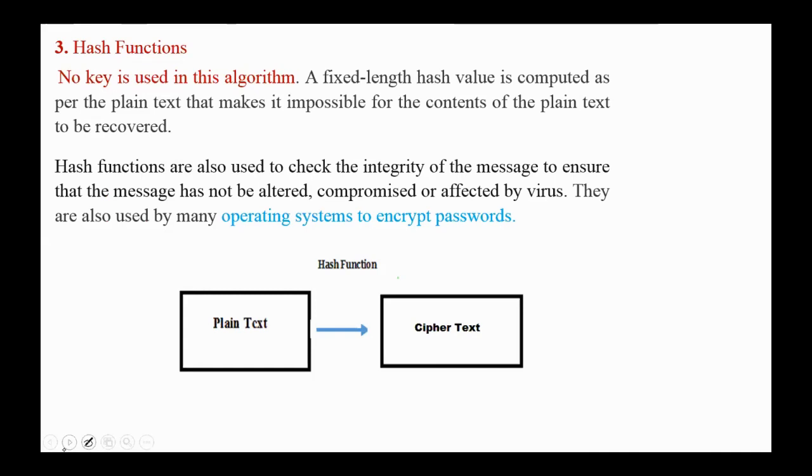The third type of cryptography uses hash functions. In this algorithm, no keys are used. A fixed-length hash value is computed as per the plaintext that makes it impossible for the contents of the plaintext to be recovered. Hash functions are also used to check the integrity of the message, to ensure that the message has not been altered, compromised, or affected by virus. They are also used by many operating systems to encrypt passwords.